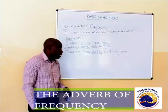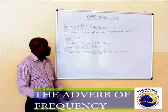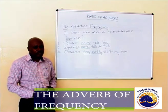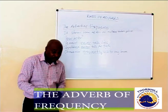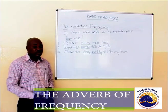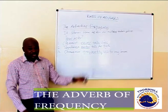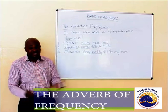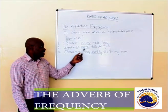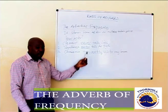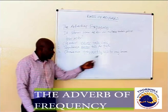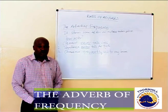To summarize what we have looked at today: we have been looking at the adverb of frequency, which normally answers the question 'how often' — it's an adverb that shows us how often a certain action takes place. Our examples were: Clement never tells lies, with 'never' as the adverb of frequency; Siabonga often tells the truth, with 'often' as the adverb of frequency; and Chimueme frequently visits my home, with 'frequently' as the adverb of frequency.